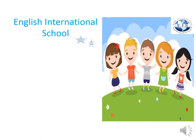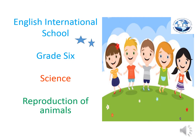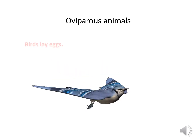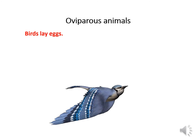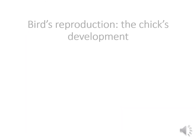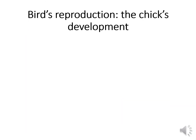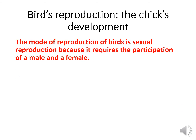Hello 6th graders, we are going to continue our lesson on reproduction of oviparous animals. Birds are oviparous animals. We will talk about birds reproduction in general, and especially the chick's development. The mode of reproduction of birds is sexual reproduction, because it requires the participation of a male and a female.